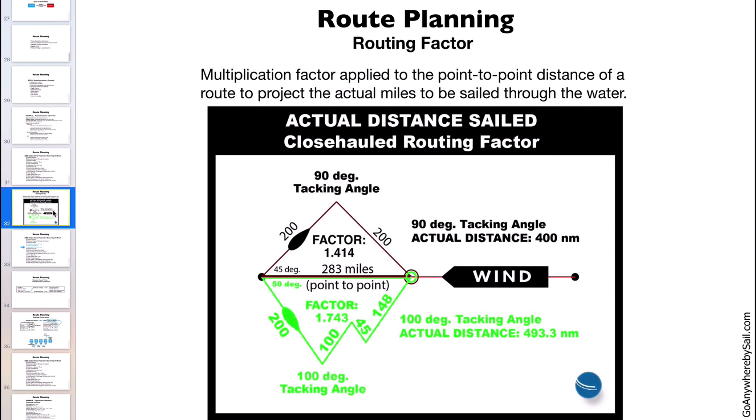You could plot it out by hand every tack if you want to. You could take your parallel rules and your dividers, or you could do it in your chart plotter and come up with a distance on every tack you're going to make. That's really not feasible and it's pretty tedious. I've tried it, it didn't work as well.